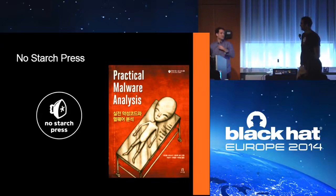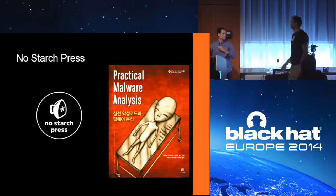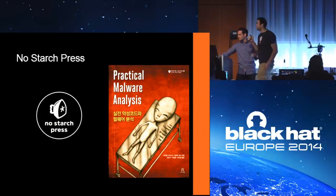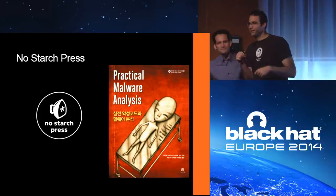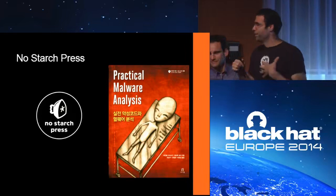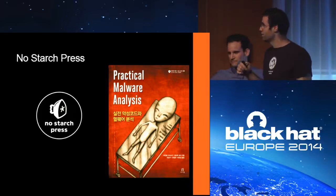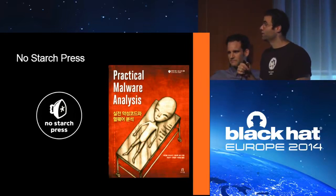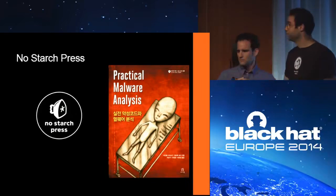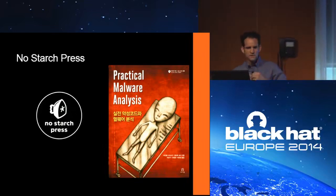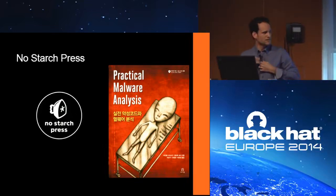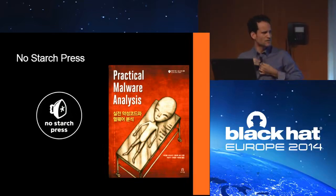Andy, you want to introduce yourself? I'm Andy Honig. I work for Google on virtualization security. Before that, I was with NSA for eight years doing malware and reverse engineering. I'm based in New York City and he's based in Seattle. This is, I think, the first time we've presented together.